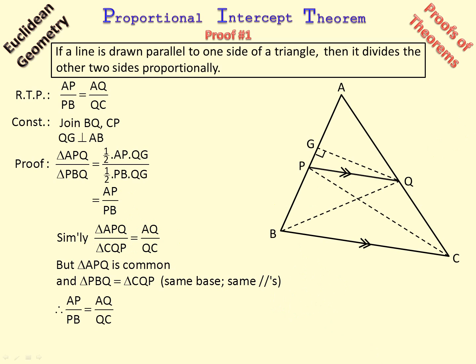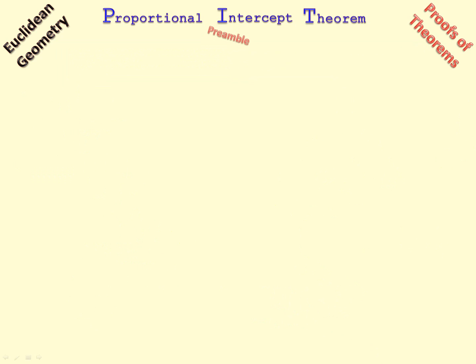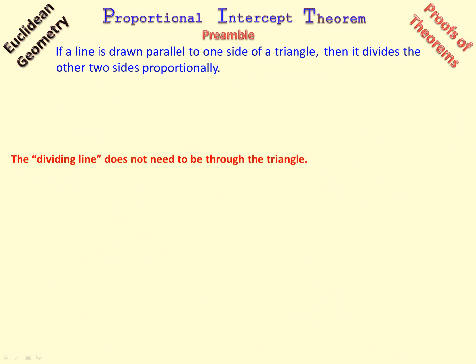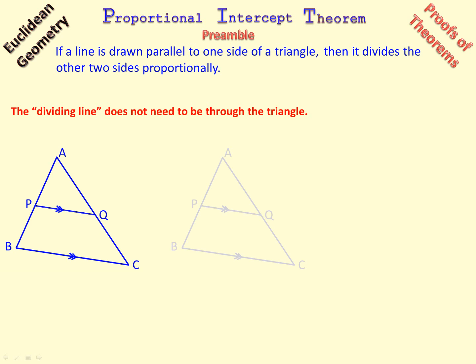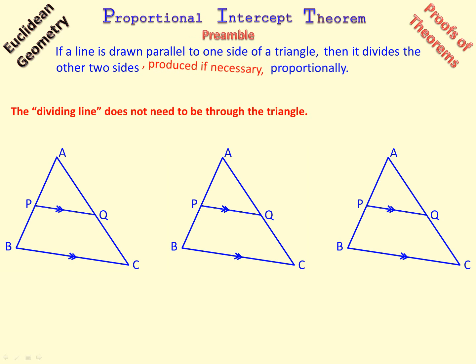But of course, being mathematicians, we can always complicate things. So I am going to go back to the preamble. I am going to say the dividing line does not need to be through the triangle, inside the triangle. So there are triangles, but two of them I am going to draw the line outside. So there we are, instead of saying it divides the other two sides proportionally, it says it divides the other two sides produced if necessary, proportionally.